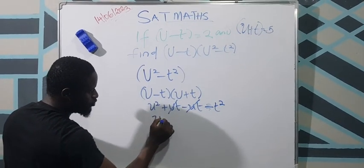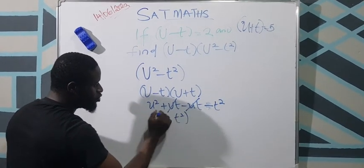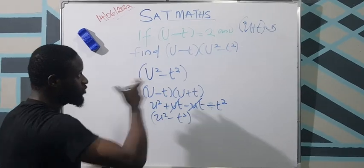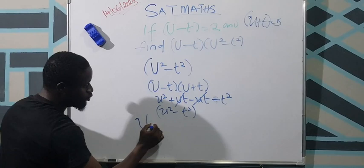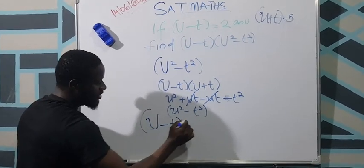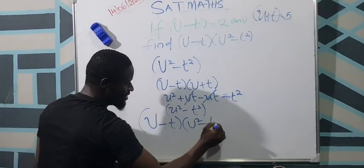So when this cancels, you have your u square minus t square. So knowing the factors or the factorials of this particular equation, we can now substitute where our final equation is u square minus t square.